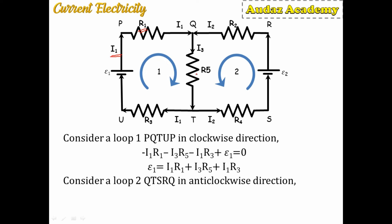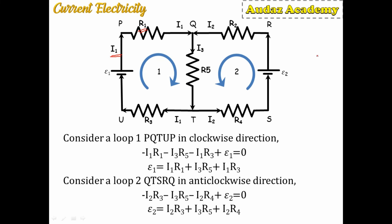For the second loop QTSRQ, traced in the anti-clockwise direction, the loop tracing and conventional current are again in the same direction, so all resistor drops are negative. The equation is: −I2·R3 − I3·R5 − I2·R4 + E2 = 0, or E2 = I2·R3 + I3·R5 + I2·R4.